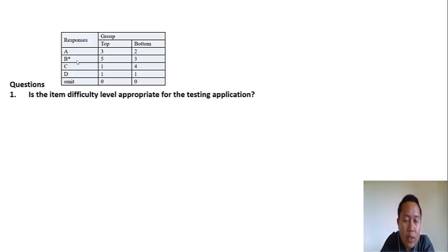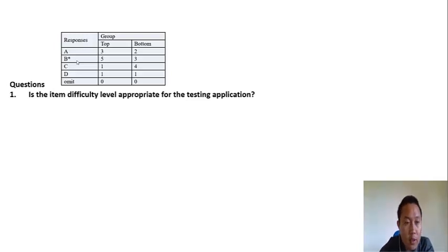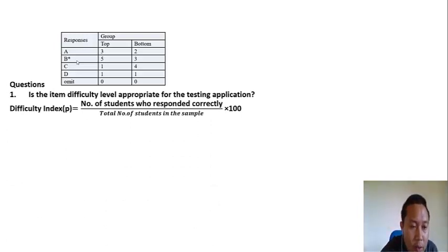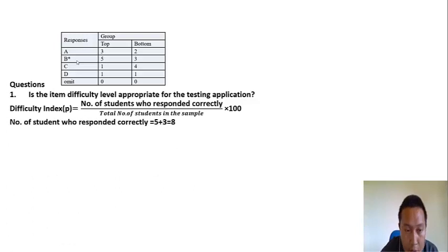Question number one: is the item level appropriate for testing application? It is asking whether the item difficulty level is appropriate for the test. To answer this, we have to calculate the difficulty index. The difficulty index is denoted by small letter P, and the formula is: number of students who responded correctly divided by number of students in the sample, times 100.